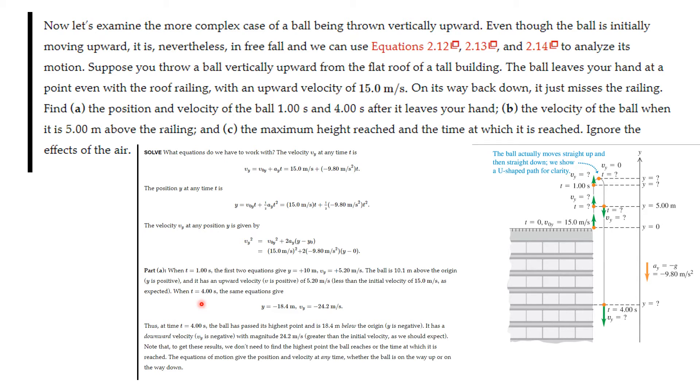When t is 4, you plug in and you find that y is minus 24.2 meters, and the velocity in y is minus 24.2 meters per second. So now it's going down and it's also 18 meters underneath this. So at time equal four, it's passed its highest point and is 18.4 below the origin. And it has a downward velocity because it's moving downward at the time.